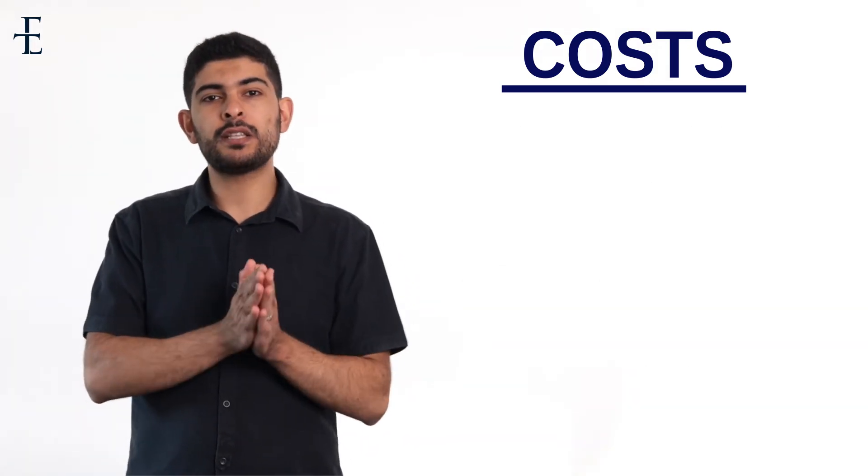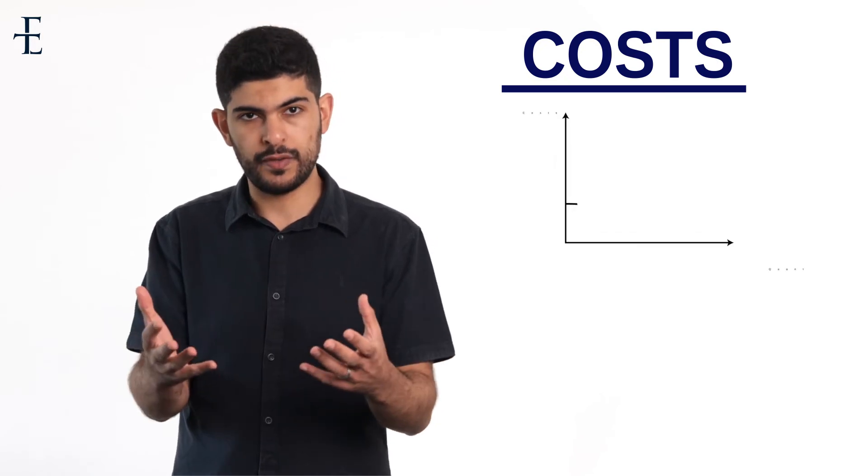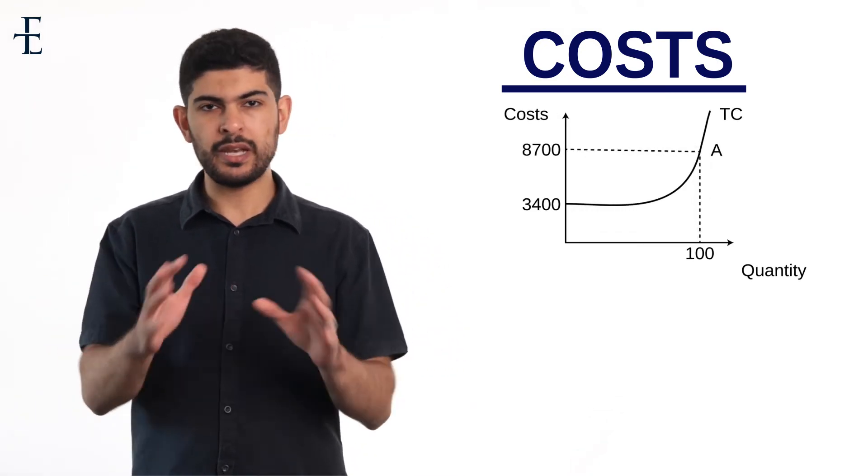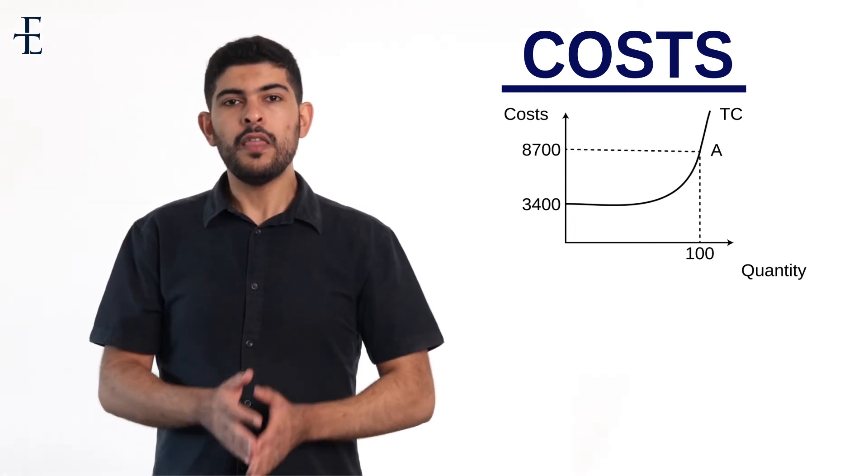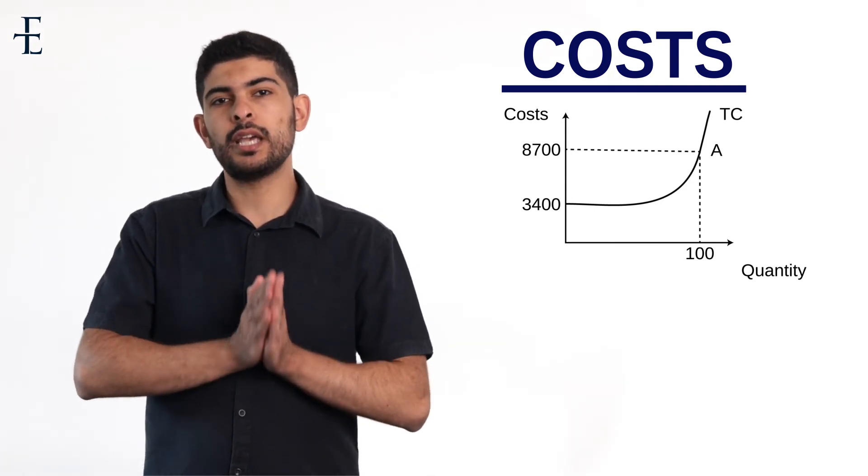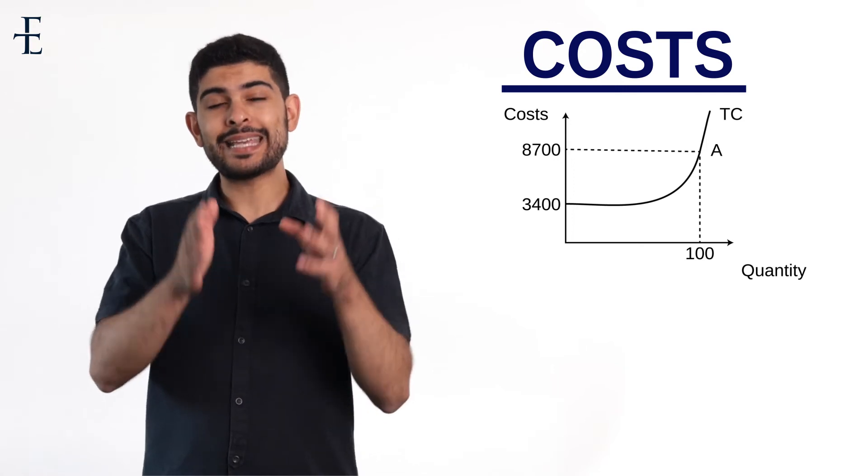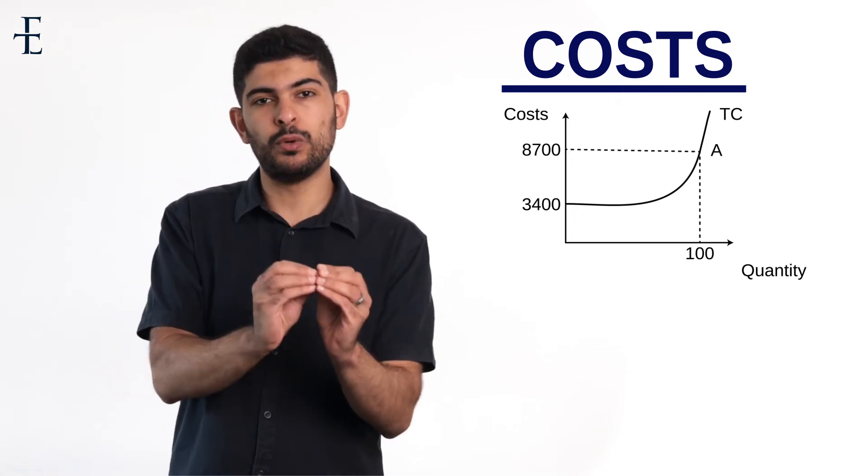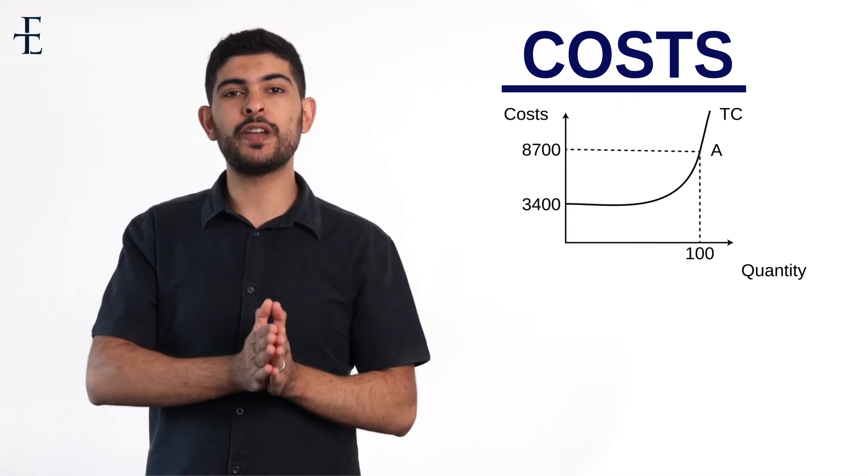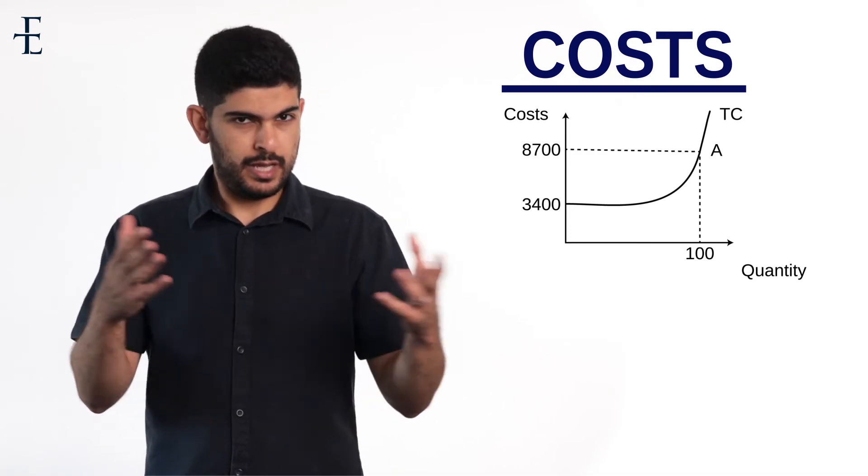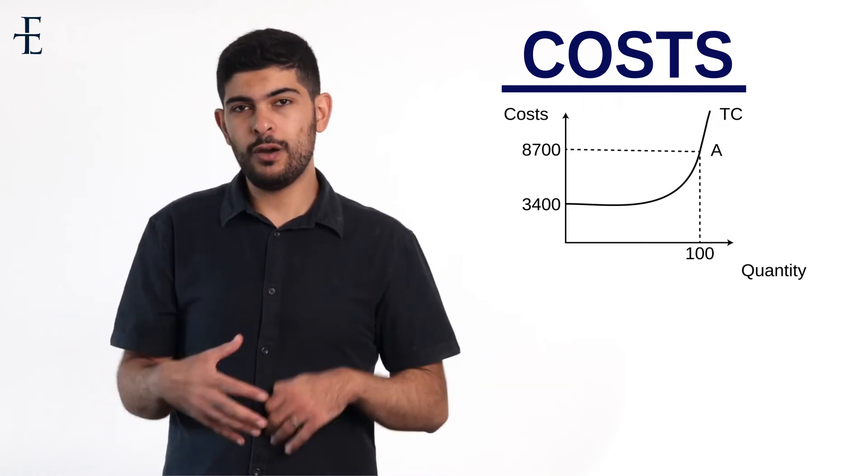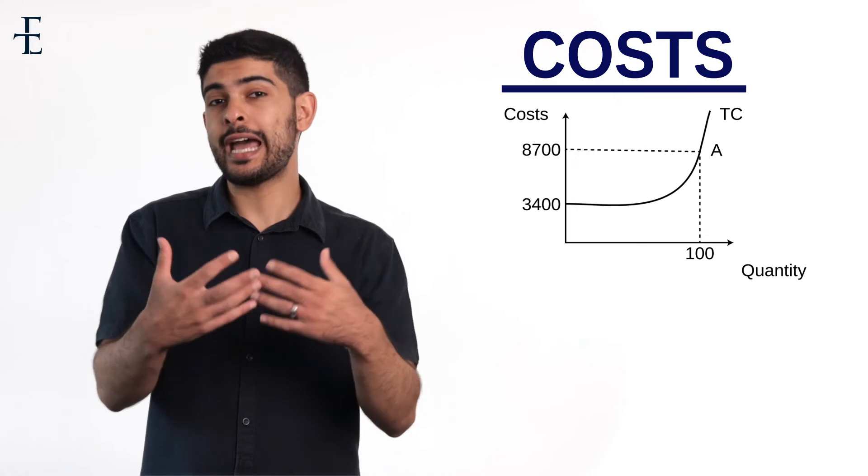Now, the very first diagram that I'd like you to see is a total cost curve. You should be able to see the total cost curve now. It has a couple of numbers, made up numbers just for your reference. The first question I'd like you to answer is as follows: based exclusively on the diagram, is it possible or impossible for you to tell me what the fixed cost is? If you think it's possible, I also want you to shout out what number you think it actually is.